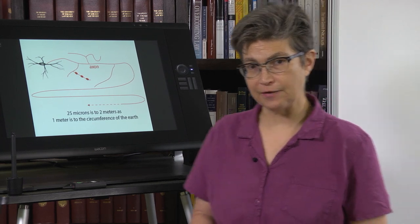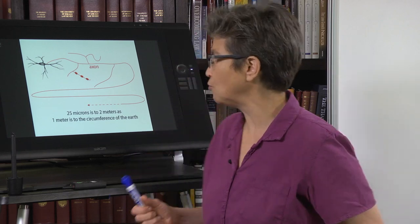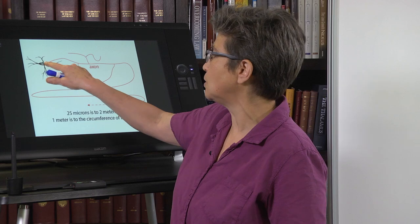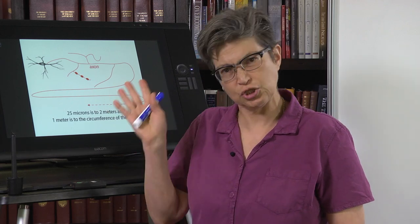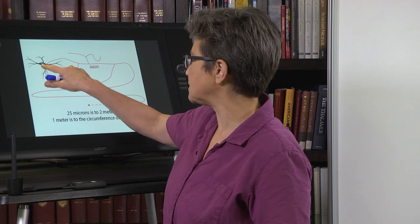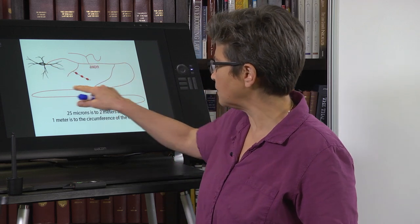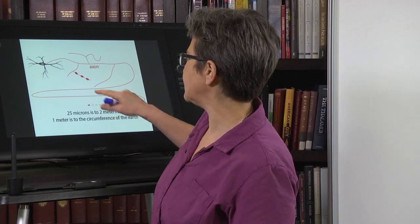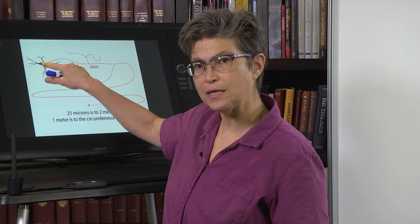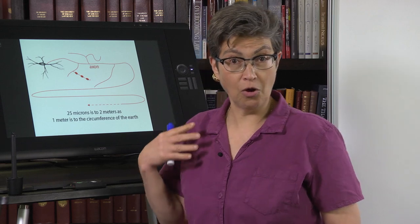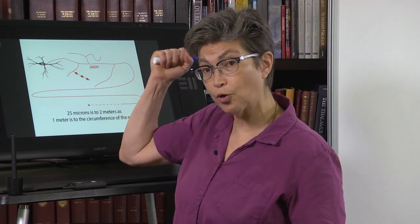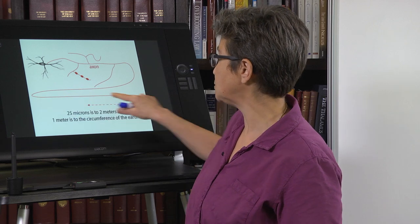It is a difficult endeavor to be a neuron and to last a lifetime. Here's a neuron. Neurons are basically 25 microns in diameter — that's a common size of a neuron — and it has an axon that can be two meters long. So this 25-micron cell body, which is responsible for all the manufacturing, all the blueprints for the entire cell, has to keep this two-meter-long process healthy for seven, eight, nine, even ten decades. That's asking a lot.